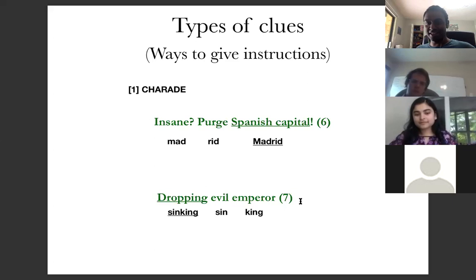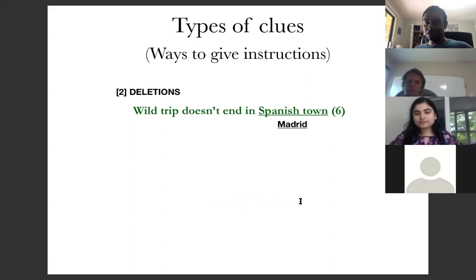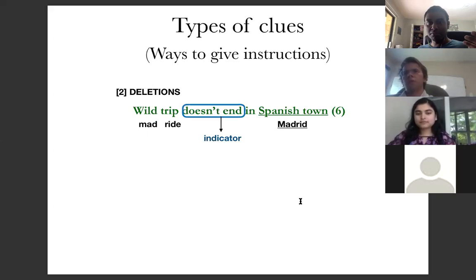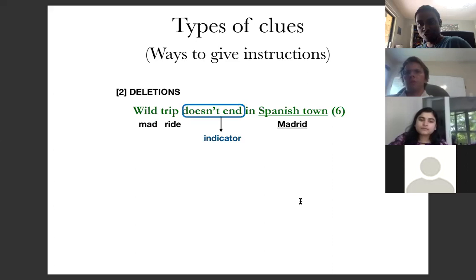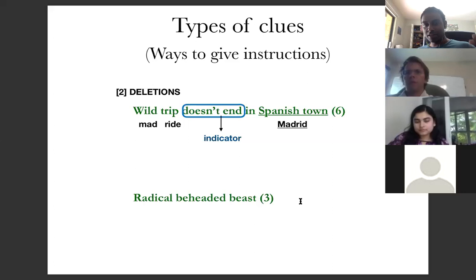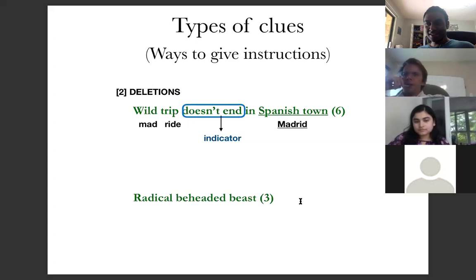Yet another way to construct a clue is to give some words and delete letters from them — the deletion clue. For example: 'Wild trip doesn't end, Spanish town.' Spanish town is the definition, 'mad ride' is the charade part, and 'doesn't end' is the indicator — it tells you to remove the last letter of 'mad ride,' giving you 'mad rid,' which is 'Madrid.' Similarly, 'radical beheaded beast, three letters' — 'beheaded' is the instruction to remove the first letter, and 'radical' is the synonym.